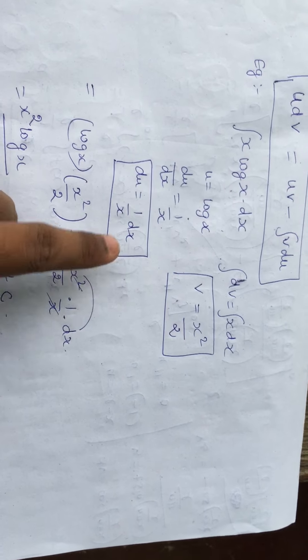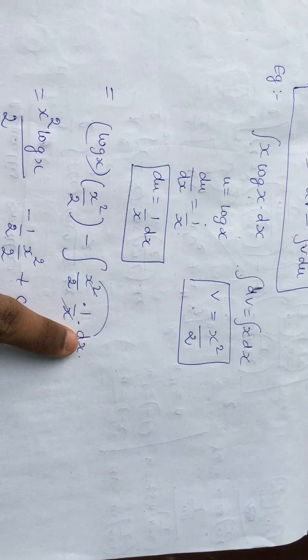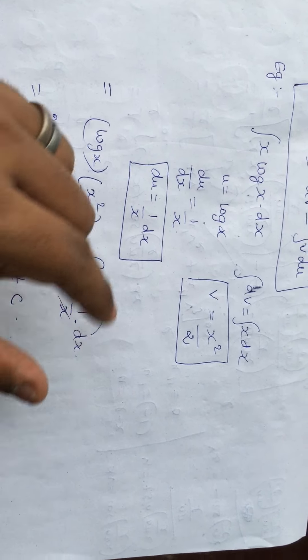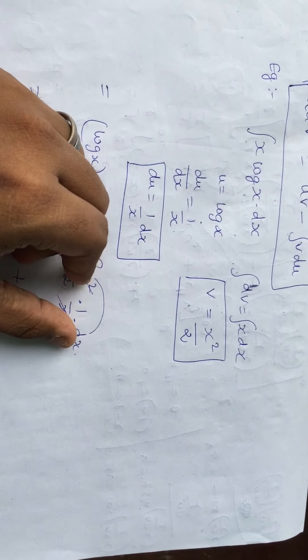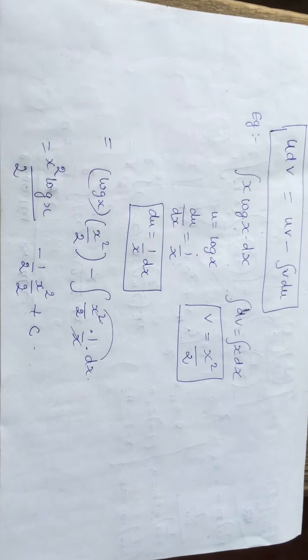If I simplify this, the x cancels with x in the denominator, leaving minus one-half x dx. Then again I integrate x dx to get x squared by 2. Bye friends.